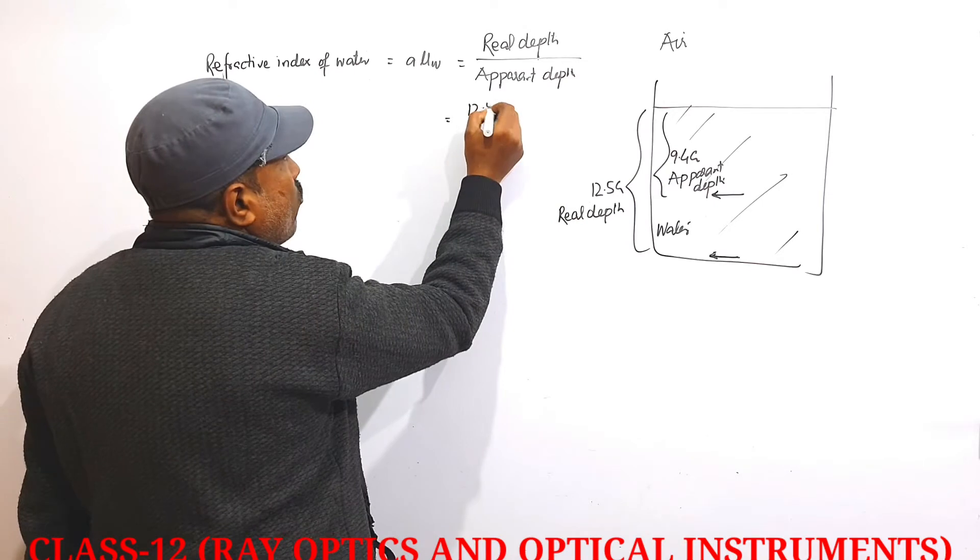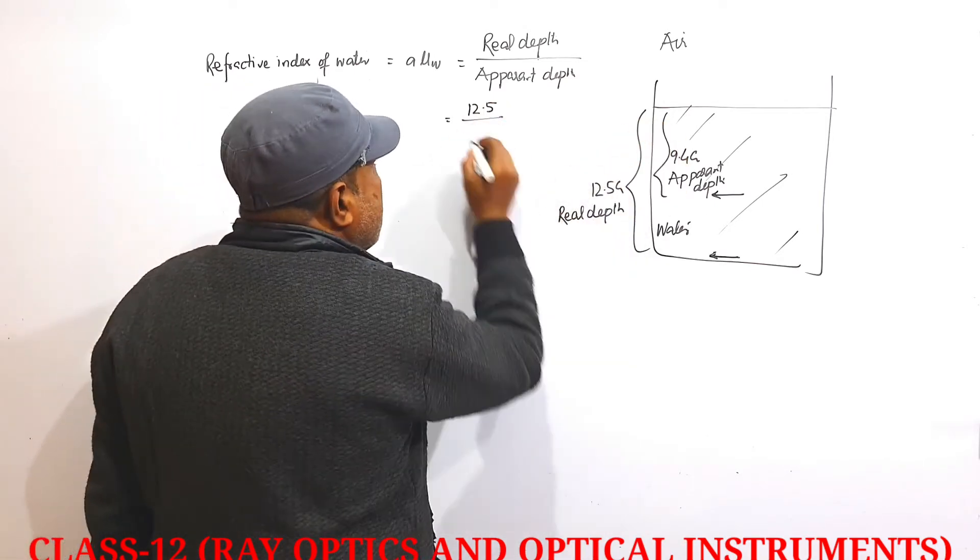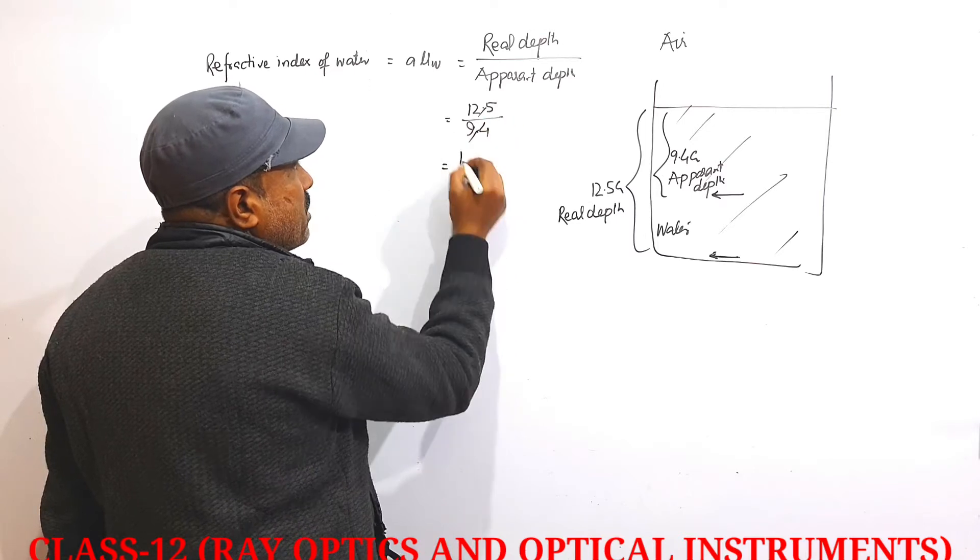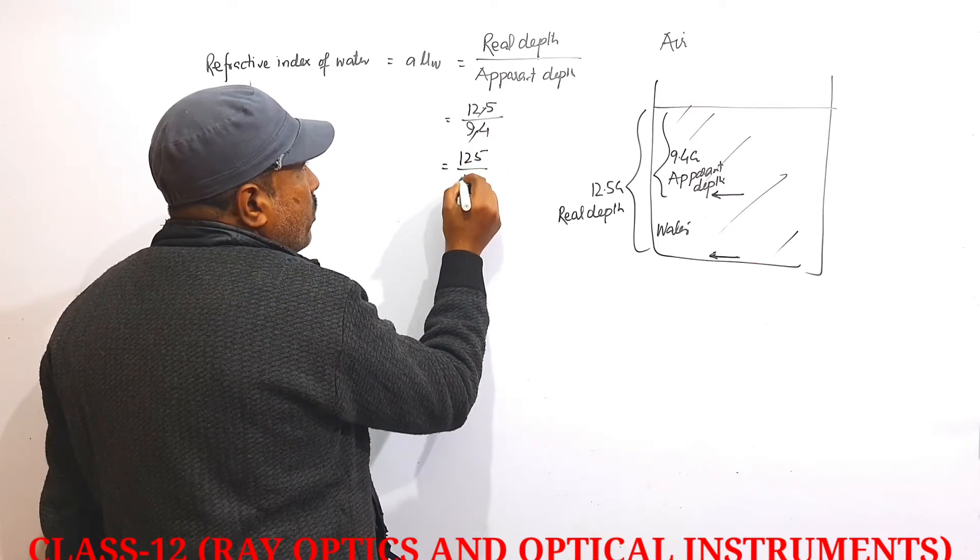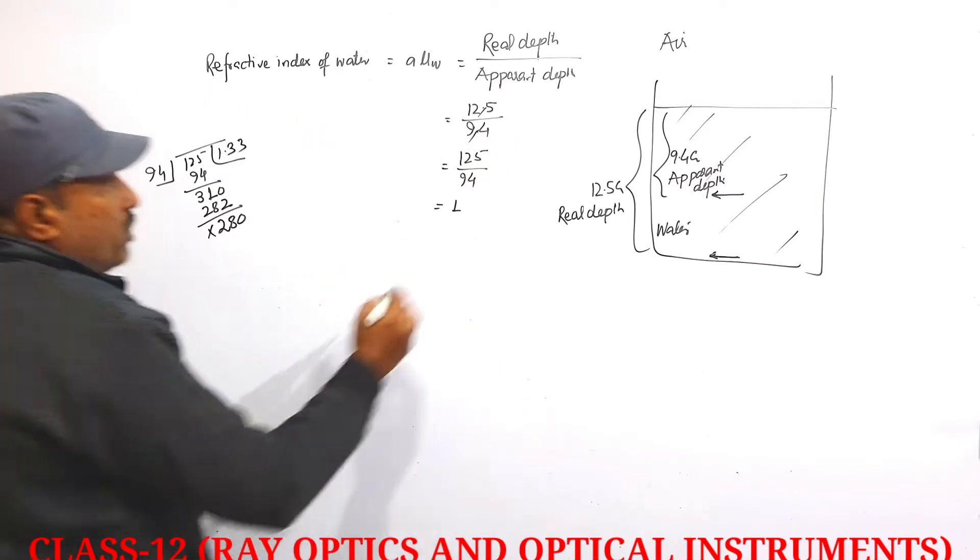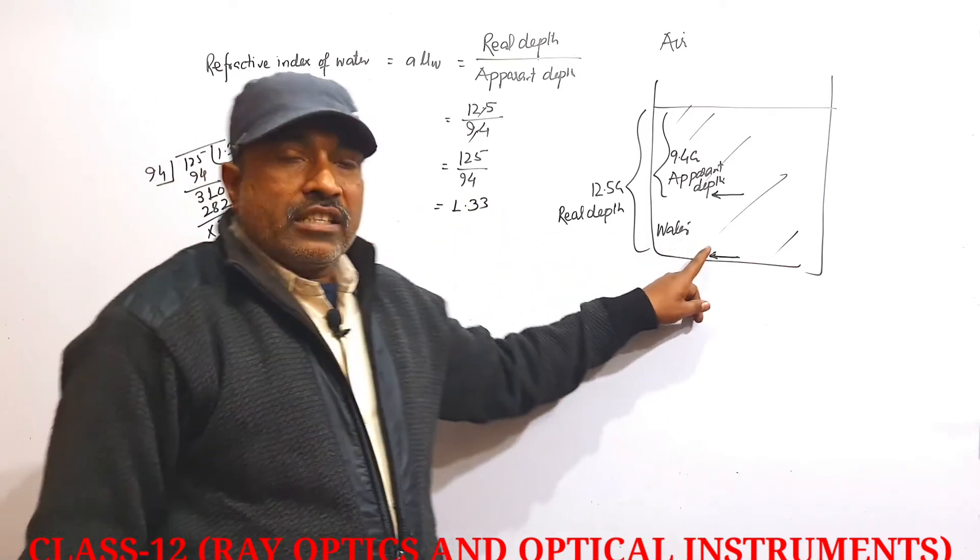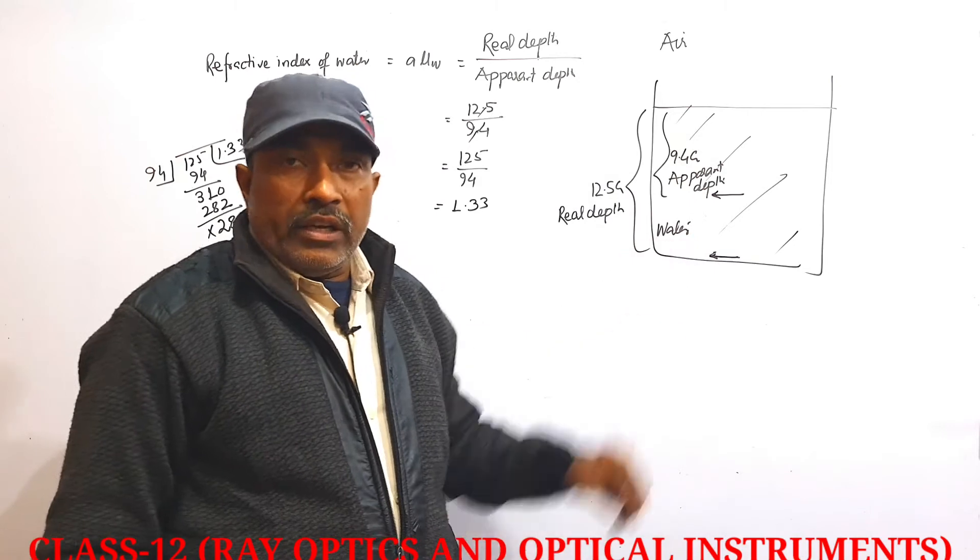Real depth is 12.5 cm, apparent depth is 9.4 cm. Solving this gives 12.5 divided by 9.4 equals 1.33. This is the refractive index of water with respect to air.